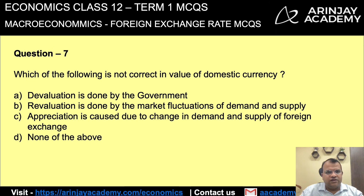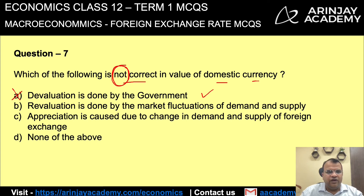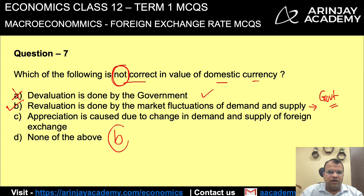Which of the following statements is not correct? Devaluation is done by the government — this is correct, and since we are looking for the incorrect statement, this cannot be the right answer. Revaluation is done by market fluctuations of demand and supply — this is wrong, because revaluation is again done by the government, not by market forces. Therefore the correct answer is B.